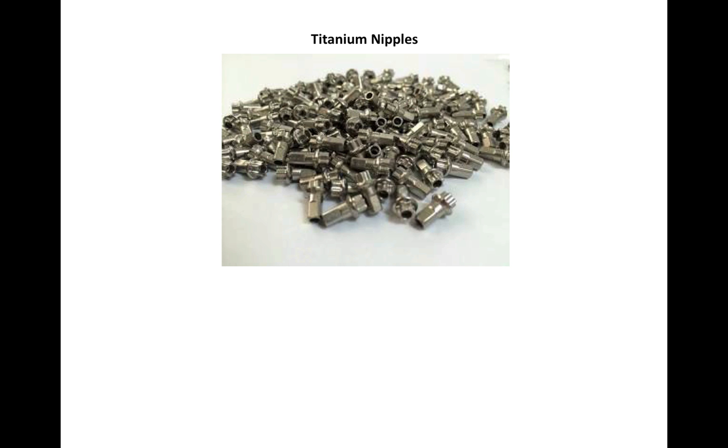Here are some titanium nipples shown in the picture. Most of us who build wheels have no experience with titanium nipples, but these are 12 millimeter nipples. And right off the bat, 12 millimeters is going to be too short for a carbon composite rim. You really need 14 millimeter nipples for that.